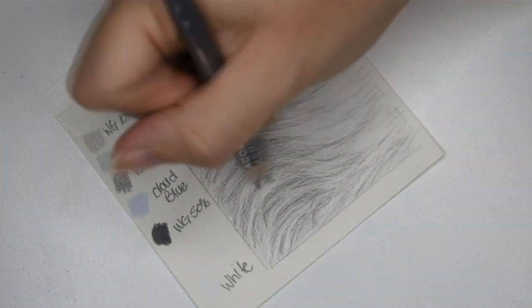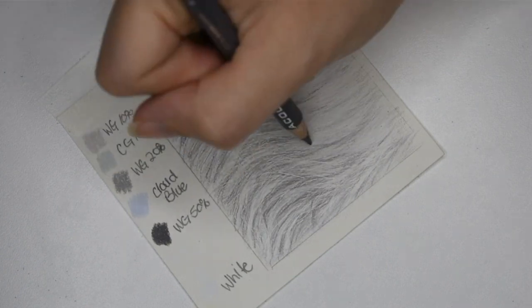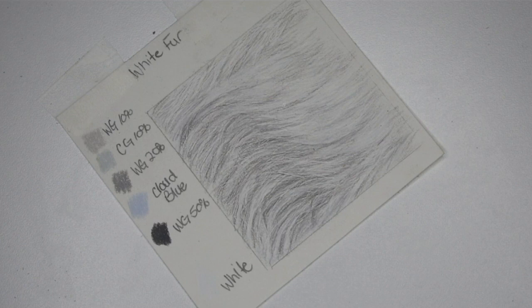To further help show the new fur strokes, I go in with warm gray 50% and carefully go around the fur lines that you should see from the dotting tool and from the knife.